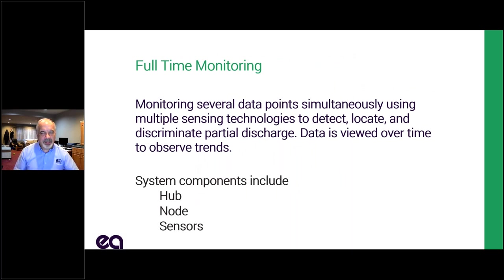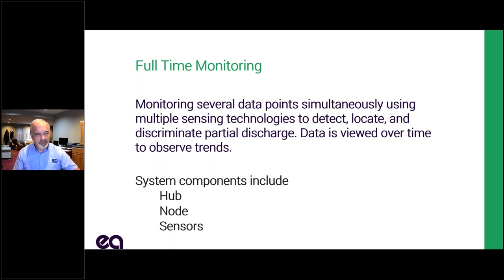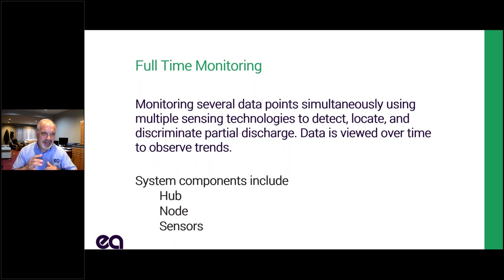So what is full-time monitoring? We're looking at several data points simultaneously with multiple different sensors to detect, locate, and discriminate partial discharge. Discriminating is the big one — we want to make sure we're looking at partial discharge, not corona, not noise. We want to look at it over time to see what's happening trend-wise. Because TEV and ultrasonic are not absolute measurements — they're relative measurements — a PD pulse of X picocoulombs doesn't equal X dB of ultrasonic noise. I can't say an absolute number is a bad thing unless it's really high. So I want to look at trends: is it getting worse? Looking over time allows that trending to work so much better.